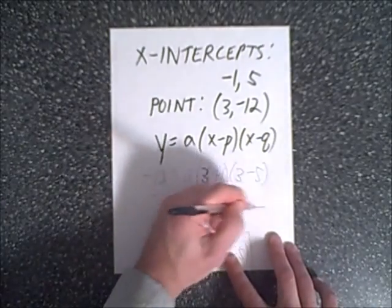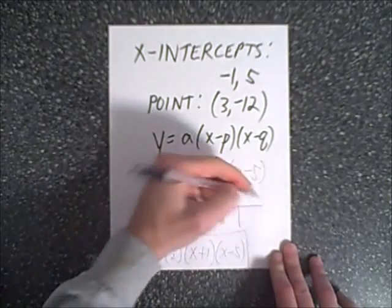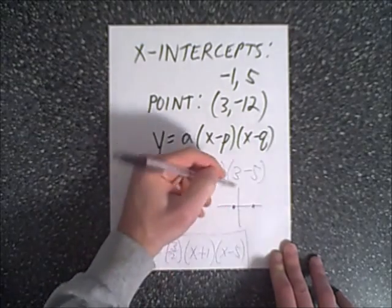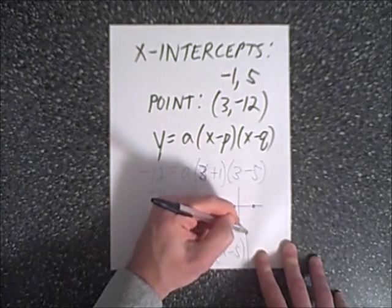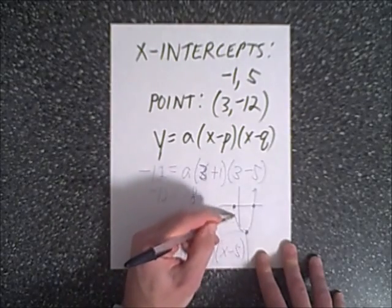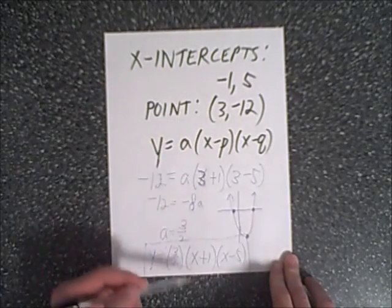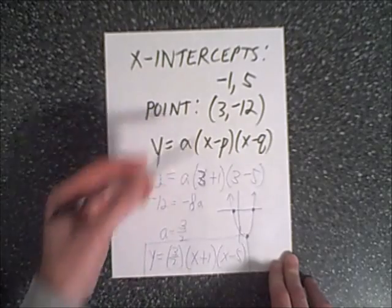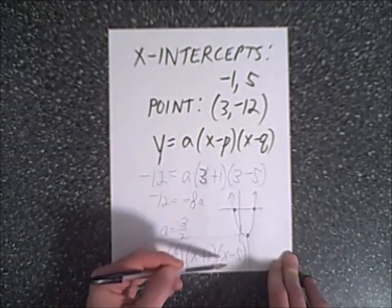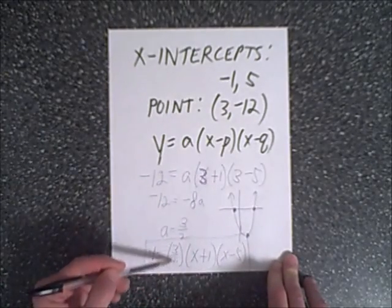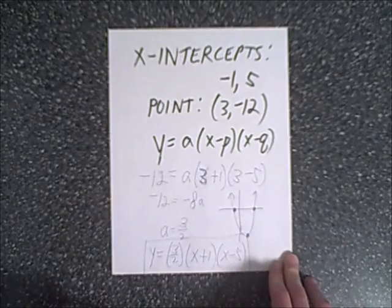We can quickly graph it to verify: x-intercepts at negative 1 and 5, and the point (3, negative 12) is below, which makes sense because with a positive a value the parabola faces upward. Plugging in x = 3: three-halves times (4)(negative 2) = three-halves times negative 8 = negative 12. The intercepts give zero as expected, so our answer checks out.